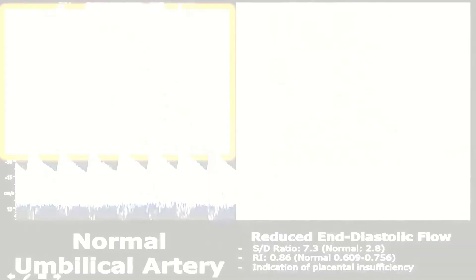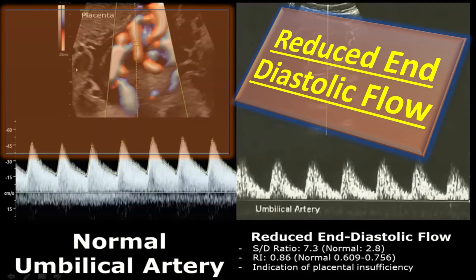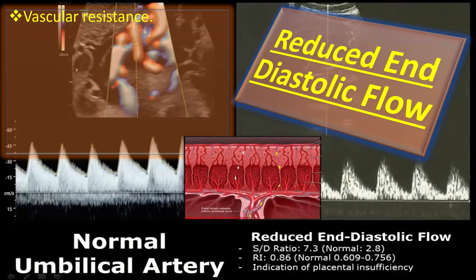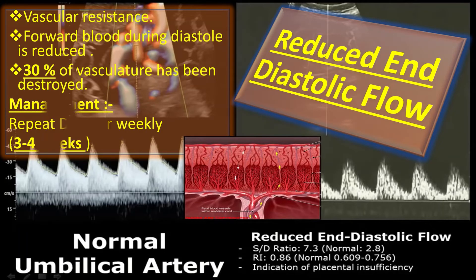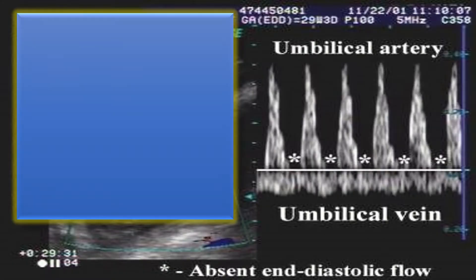Let us discuss reduced end-diastolic flow. In reduced end-diastolic flow, the vascular resistance in placental blood vessels is increased, so forward blood flow during diastole is reduced. Reduced diastolic flow means approximately 30% of the vasculature has been destroyed. Management in such cases involves repeating Doppler weekly for three to four weeks.